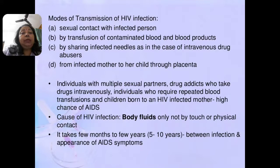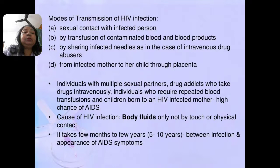The main cause of HIV infection is body fluid only — not touch or any physical contact, but body fluid is responsible for this infection. It takes near about six months to a few years — sometimes up to ten years — between infection and the appearance of AIDS signs. This period is known as the window period: the time from the date of infection to the appearance of AIDS symptoms.